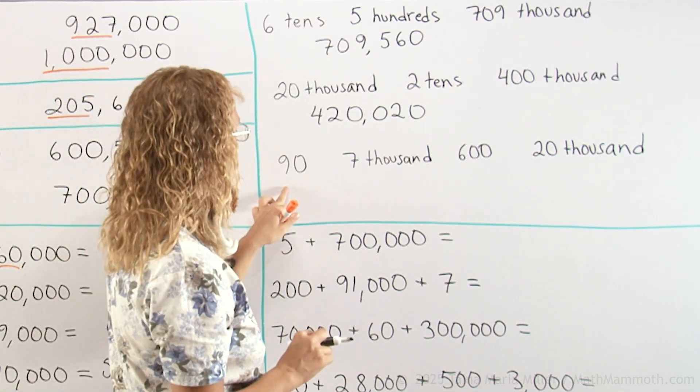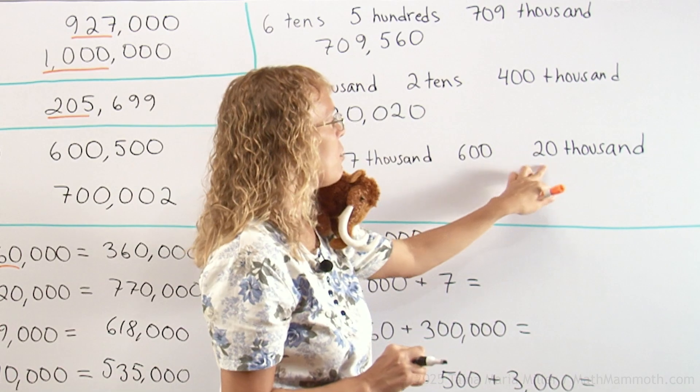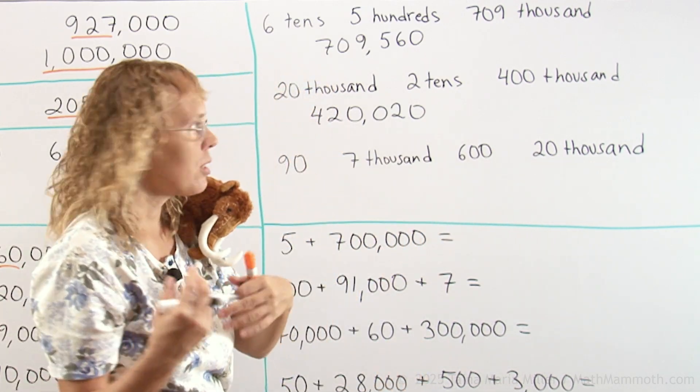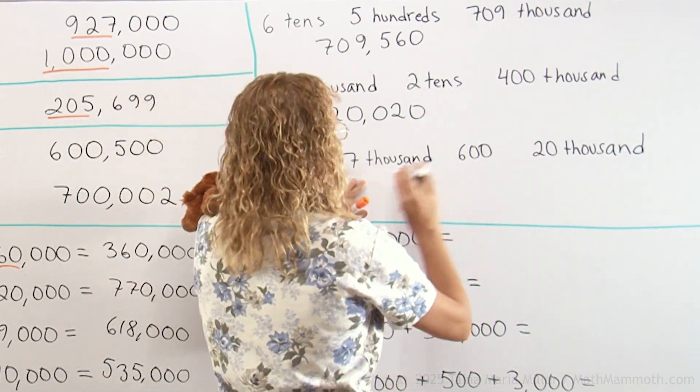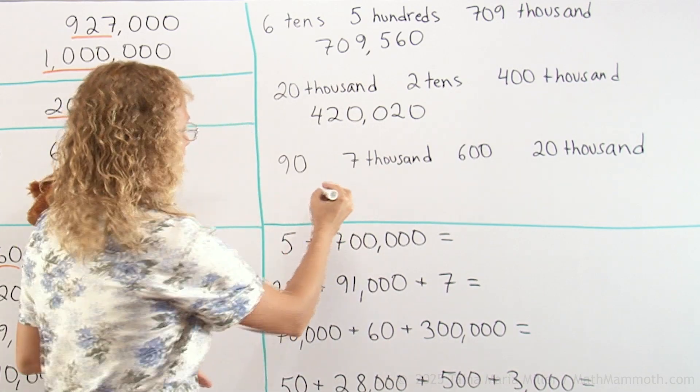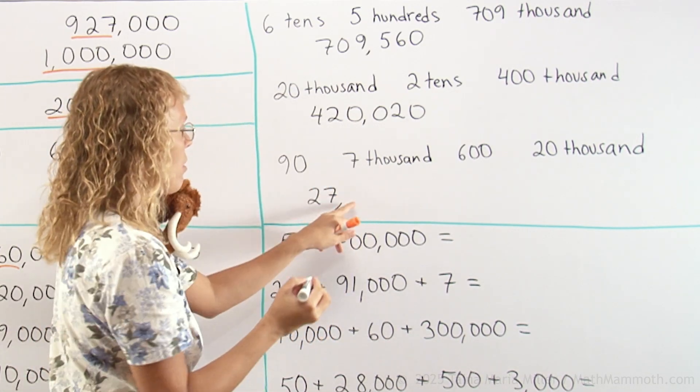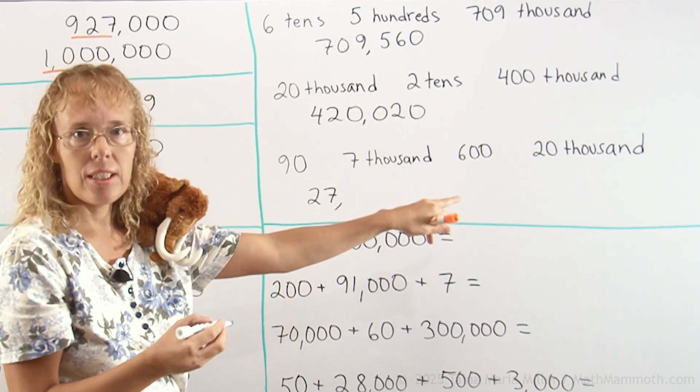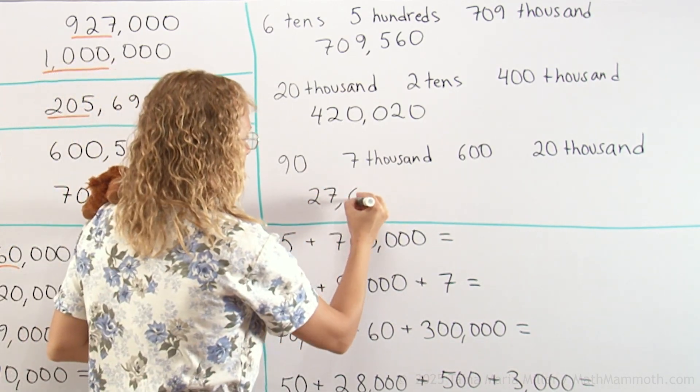Here. Ninety, seven-thousand, six-hundred, twenty-thousand. First, gather the thousands. There's twenty and seven. Twenty-seven-thousand. So twenty-seven-thousand here and then after that, three more digits. We have six-hundred-and-ninety. Six-hundred-ninety.